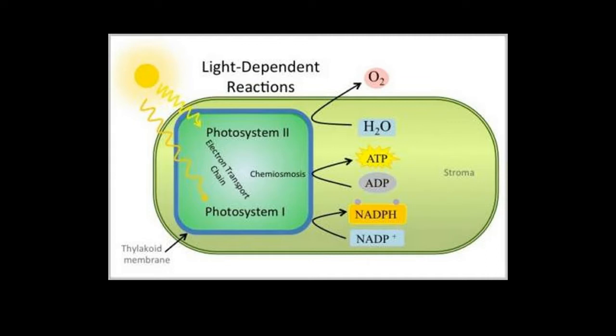The light-dependent stage of photosynthesis occurs in the thylakoid membrane. Again, it is in the thylakoid membrane because the light-trapping molecules are located in the thylakoid membrane.